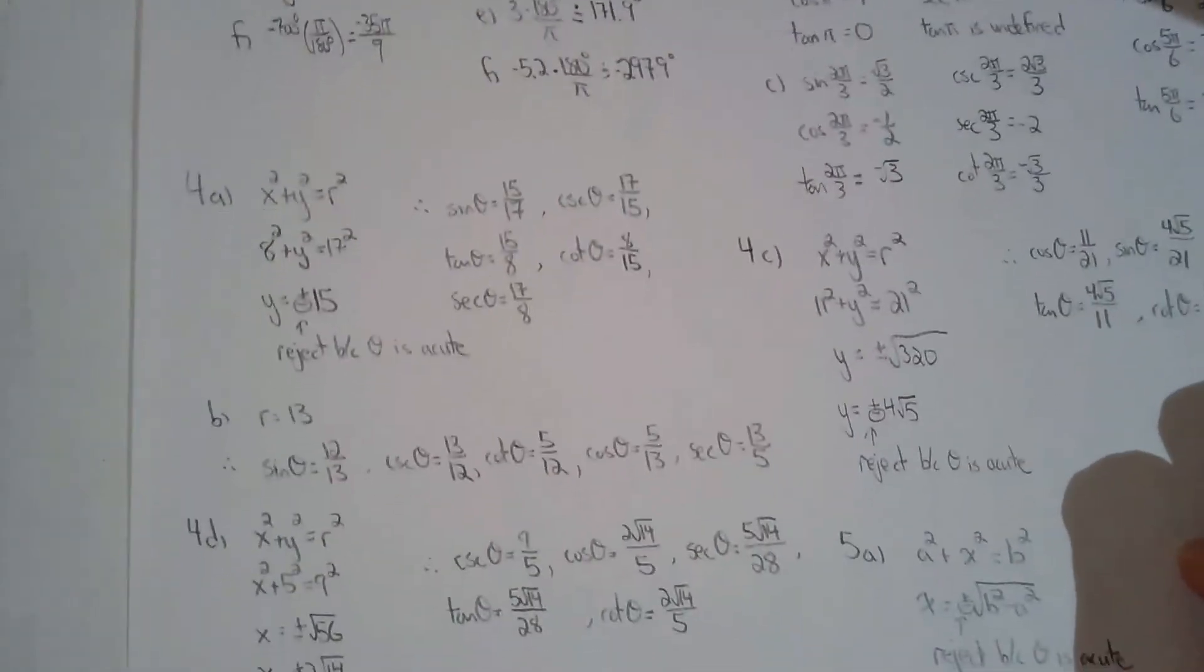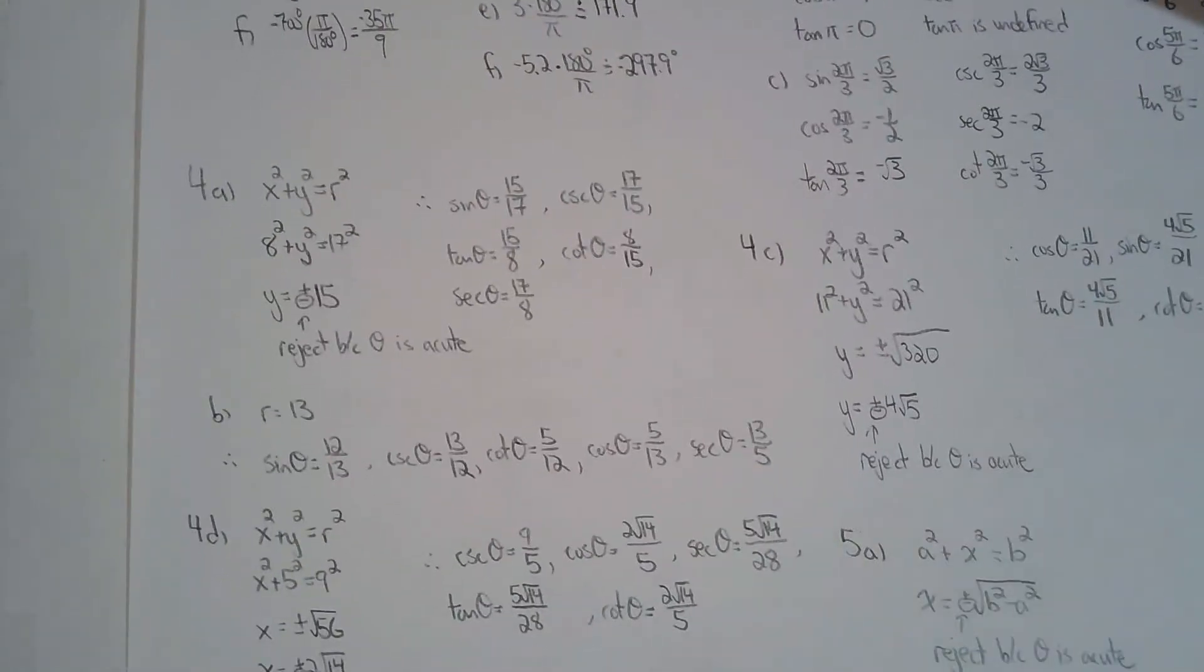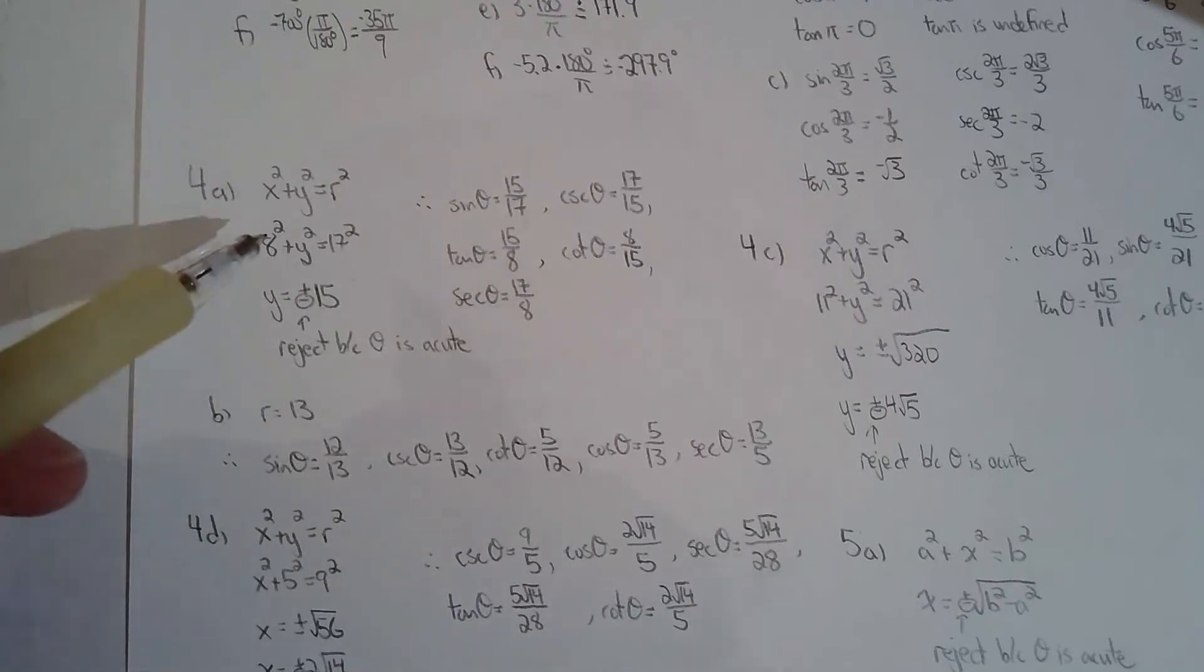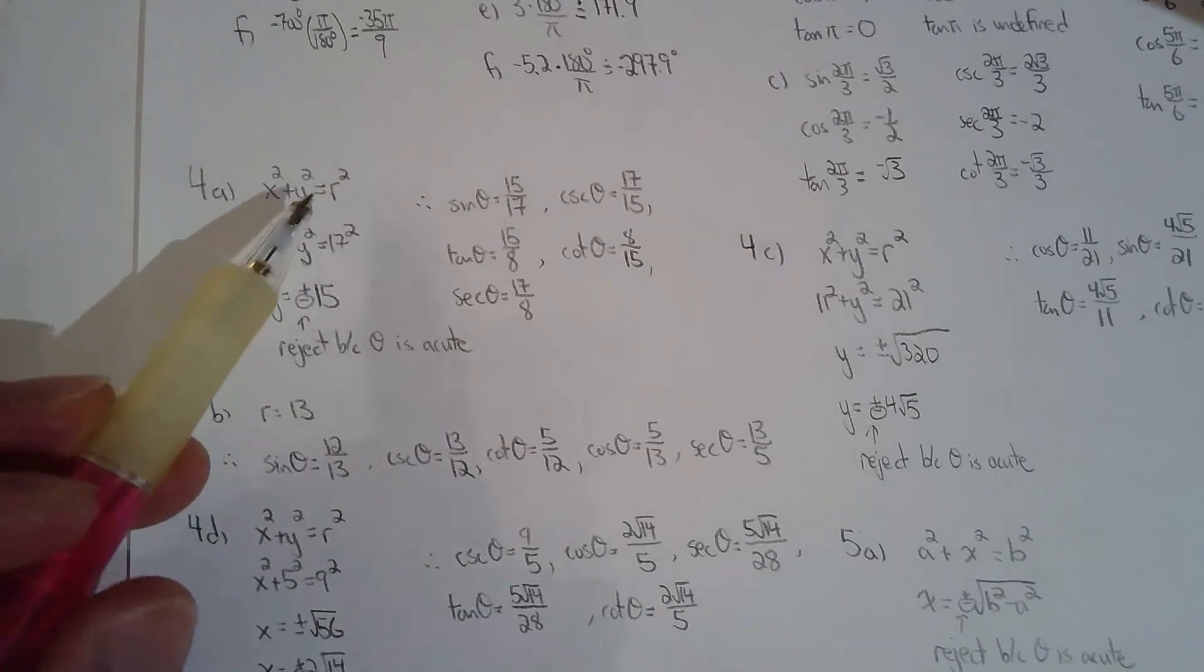Question four, let's see. For four the angles are all in the first quadrant so that actually makes it very easy. They also gave us one ratio and your job is to solve for the other five ratios. So really, they start you off with two of the three.